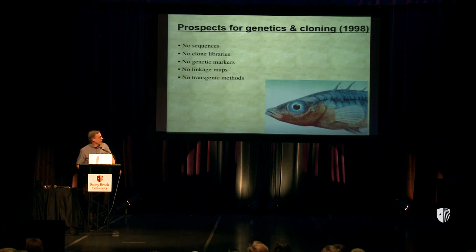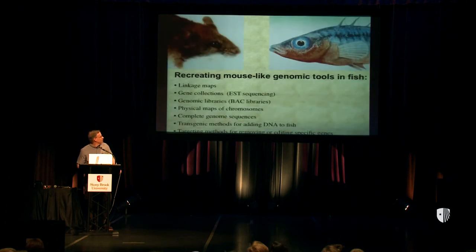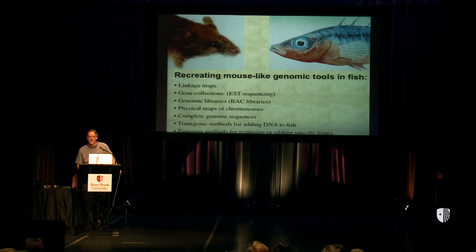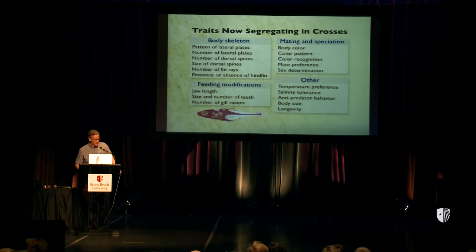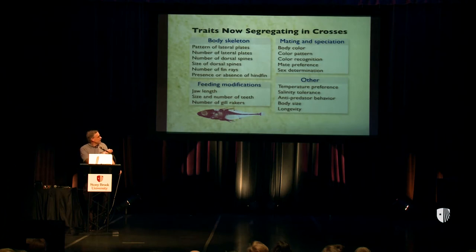When we first got interested in the fish, although they had great biology, they hadn't attracted lots of interest from molecular geneticists. In the 90s, the fish were missing lots of the resources you take for granted in a model organism. Over the last 15 years, I think the field has done a good job building a whole series of genetic and genomic resources for three-spine sticklebacks, including genetic methods for transferring genes. I'll try to show you how we've been using those tools to study a range of traits. One of the great things about this system is that once you've built the tools, you can use a genetic approach to study all sorts of different traits.